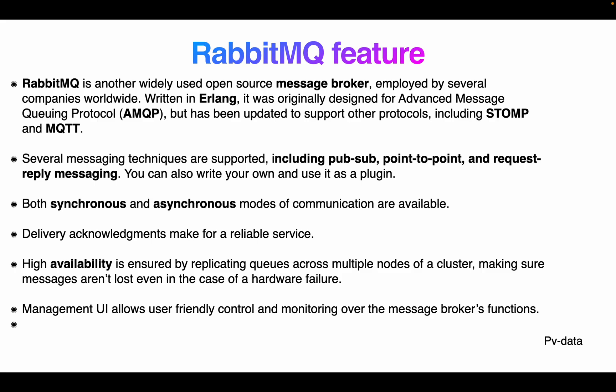RabbitMQ is another widely used open-source message broker employed by several companies worldwide, written in Erlang. It was originally designed for the Advanced Message Queuing Protocol (AMQP) but has been updated to support other protocols including STOMP and MQTT. Several messaging techniques are supported including pub/sub, point-to-point, and request/reply. You can also write your own plugins and it supports both synchronous and asynchronous modes of communication.